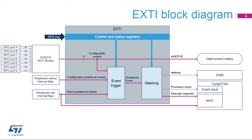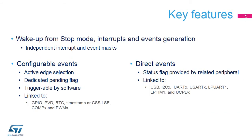Peripheral events are used by peripherals to indicate that they require processor attention. The processor event is a pulse signal used by ARM CPUs to exit the wait-for-event low-power state. The Extended Interrupt and Event Controller can generate interrupt and event as well as wake up the processor from stop modes.